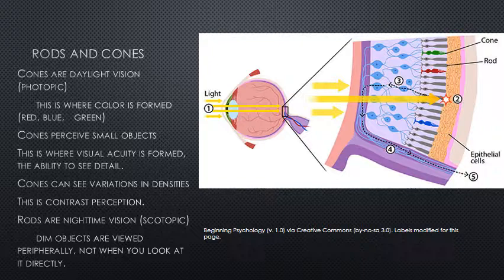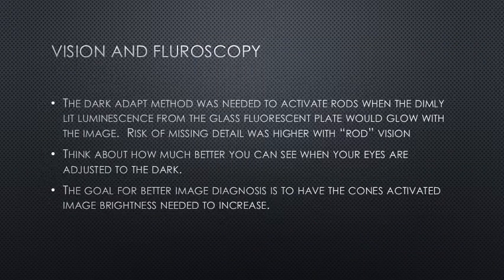Rods are considered nighttime vision, or scotopic vision. Dim objects are viewed peripherally — so when you're looking at a star in the sky, sometimes you have to turn your head, because the rods are trying to let light in and be activated so you can see in the dark. The dark adapt method was needed to activate those rods, but the problem with that is rods do not have good acuity or the ability to see detail.